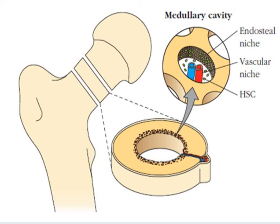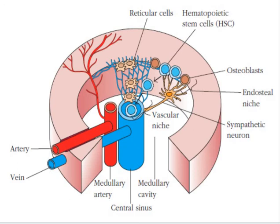The bone marrow is packed with hematopoietic cells at all stages of development, and it is likely that precursors of each myeloid and lymphoid subtype mature in distinct environmental microniches within the bone marrow. Evidence suggests that the endosteal niche — the area directly surrounding the bone in contact with osteoblasts — and the vascular niche — surrounding blood vessels and in contact with endothelial cells — play different roles. The endosteal niche appears to be occupied by quiescent hematopoietic stem cells in close association with osteoblasts that regulate stem cell proliferation.